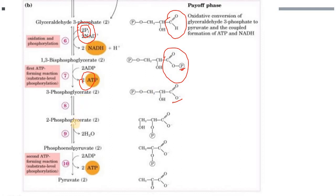The next step is the formation of 2-phosphoglycerate, a reversible reaction carried out by the enzyme mutase. The phosphate is transferred from the third position to the second position. Following this, phosphoglycerate is converted to phosphoenolpyruvate (PEP), catalyzed by the enzyme enolase in a dehydration step where H2O is removed.